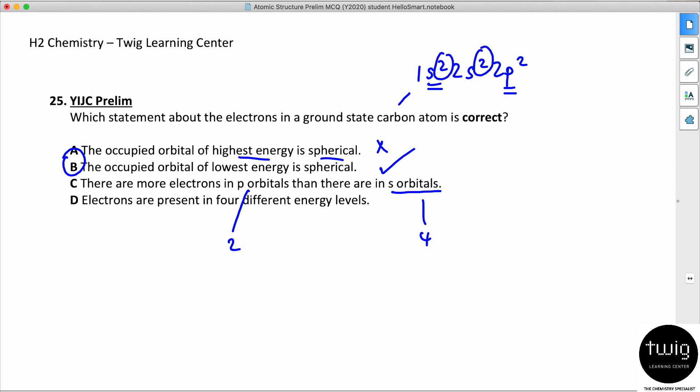Electrons are present in four different energy levels? In fact, it's three different energy levels because you have 1s, you have 2s, and you have 2p. So it's not four but three. This is also wrong. The answer should be B.